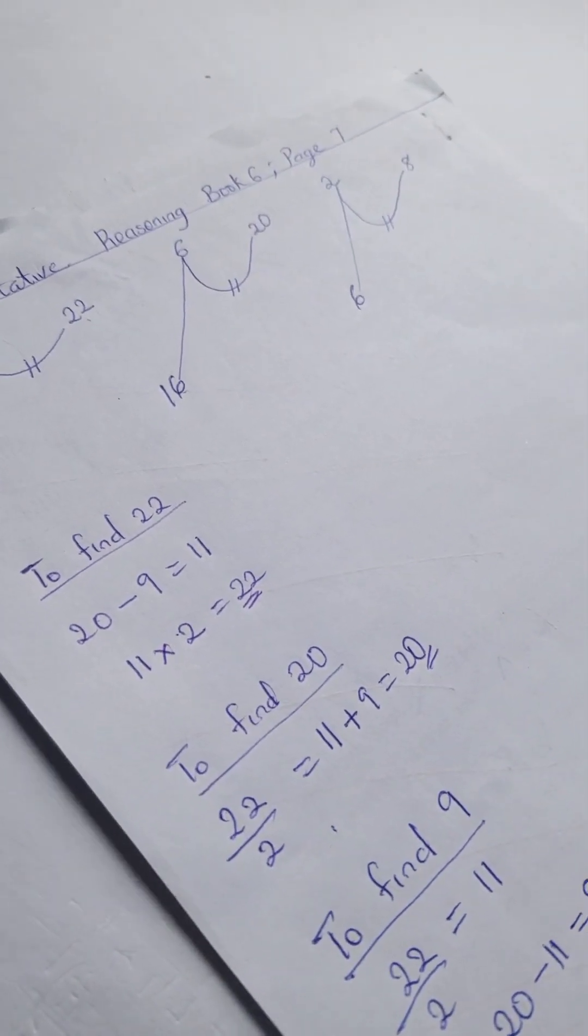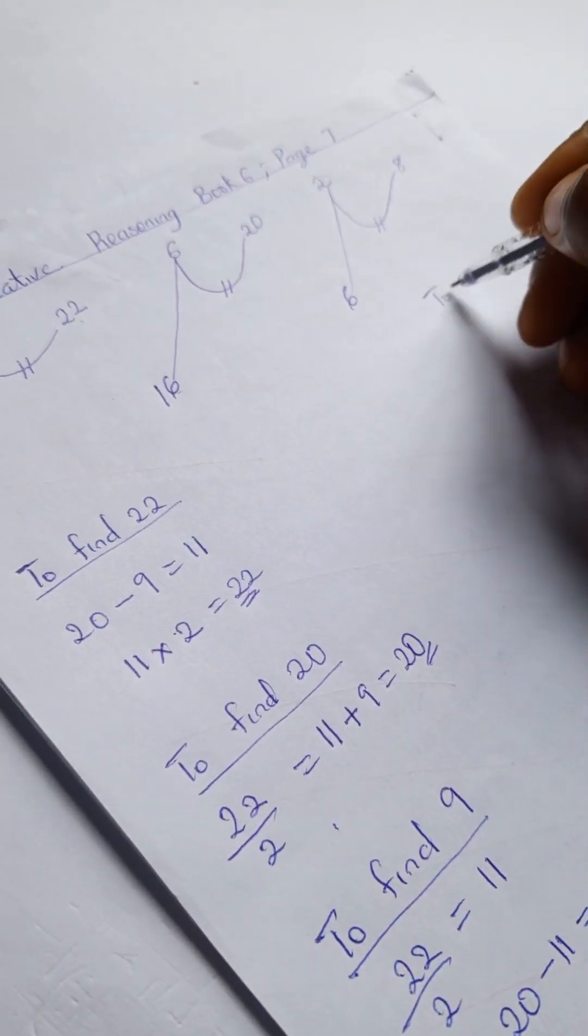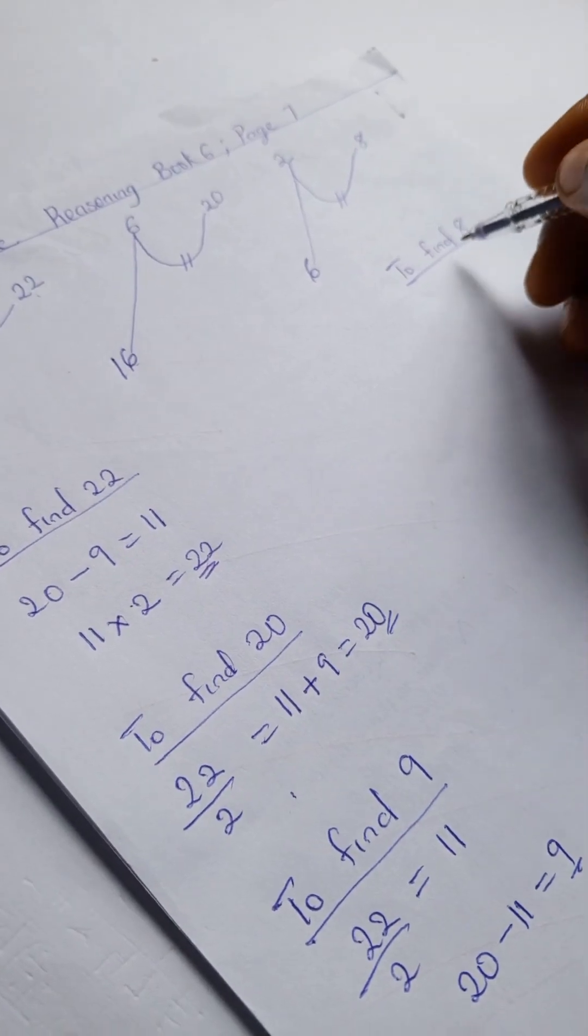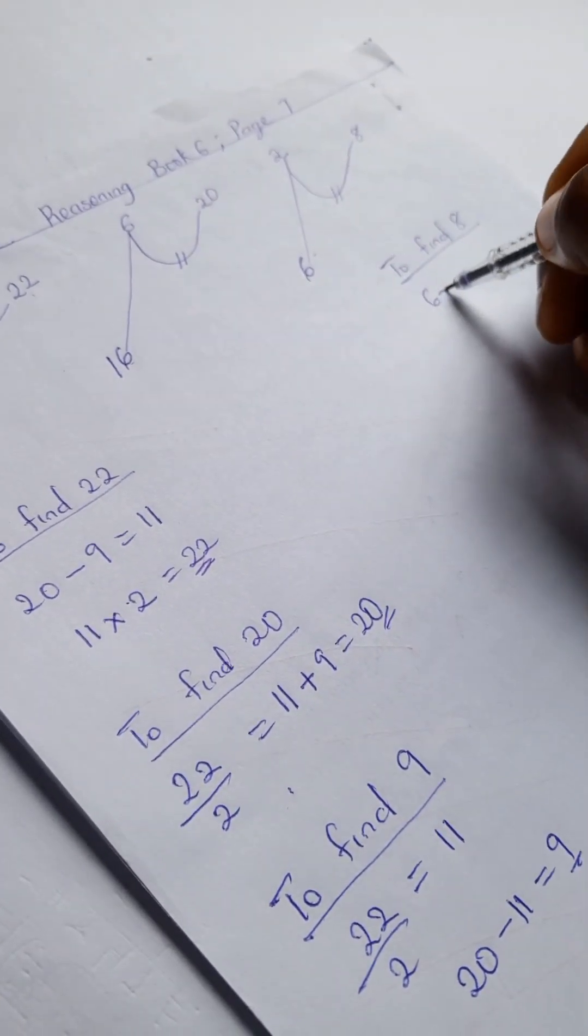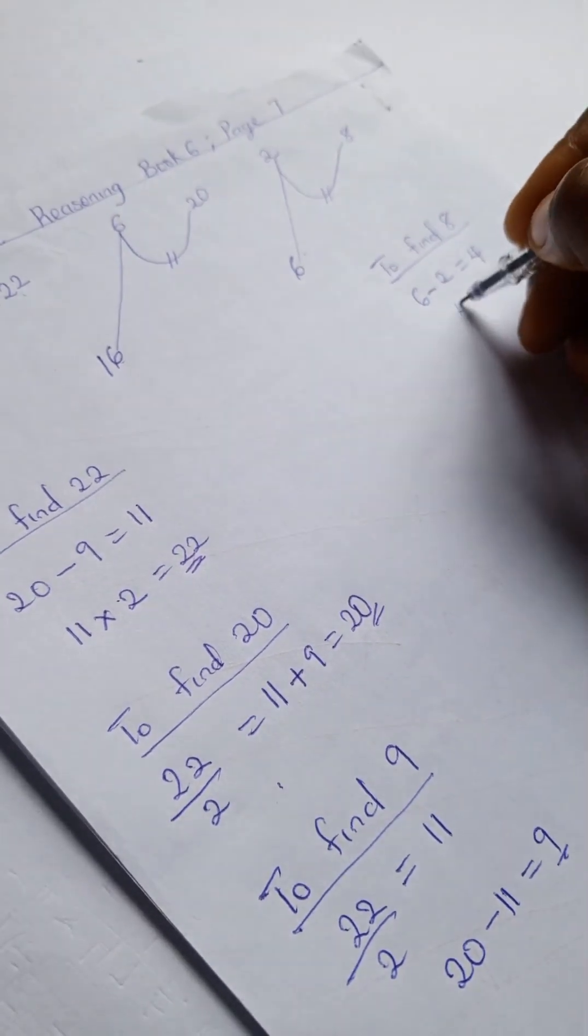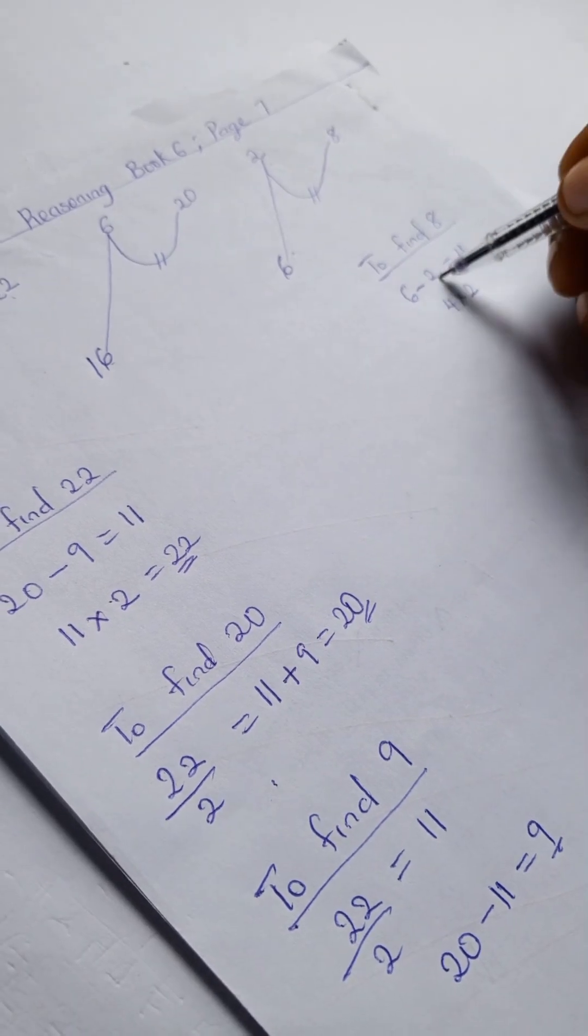Let's try this example. To find 8, we're going to have 6 minus 2 gives us 4. So 4 times our imaginary 2, that is different from this 2, we have our 8.